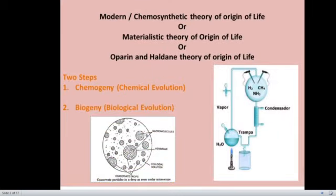The modern or chemosynthetic theory of origin of life is also known as the materialistic theory of origin of life, and sometimes it is known as the Oparin and Haldane theory of origin of life because it was proposed by Oparin and Haldane. This theory has two basic steps: the first is chemogeny, that is chemical evolution, and the second is biogeny, that is biological evolution or the formation of primitive life.